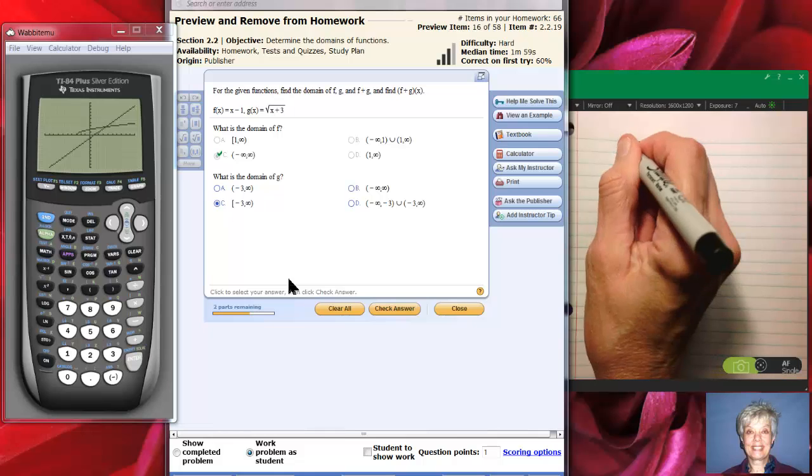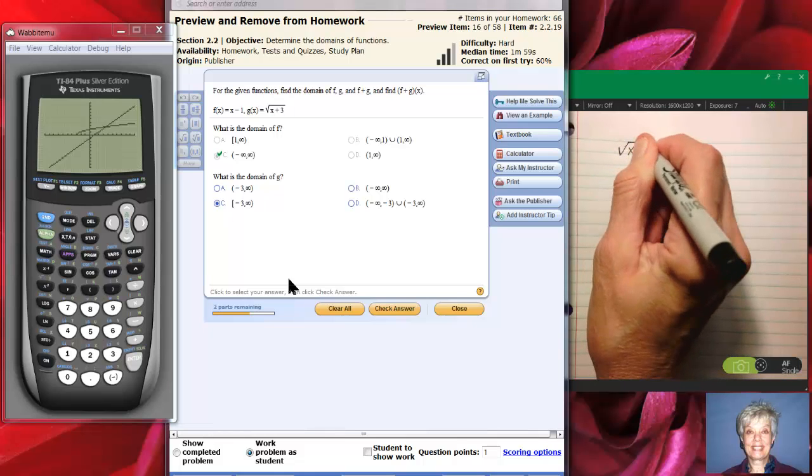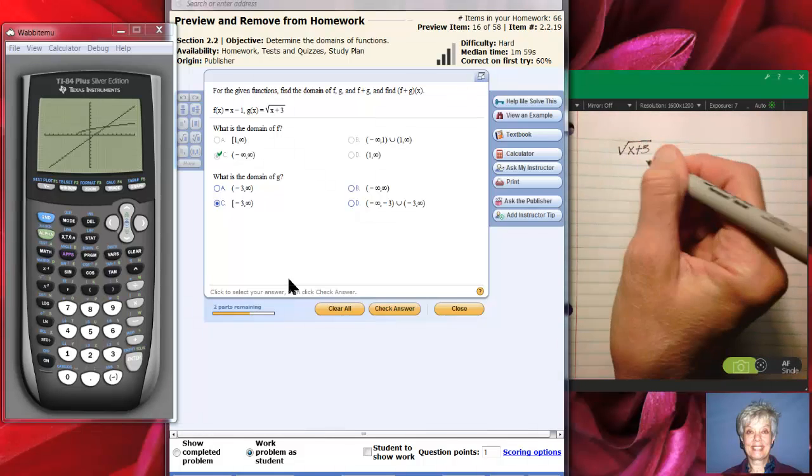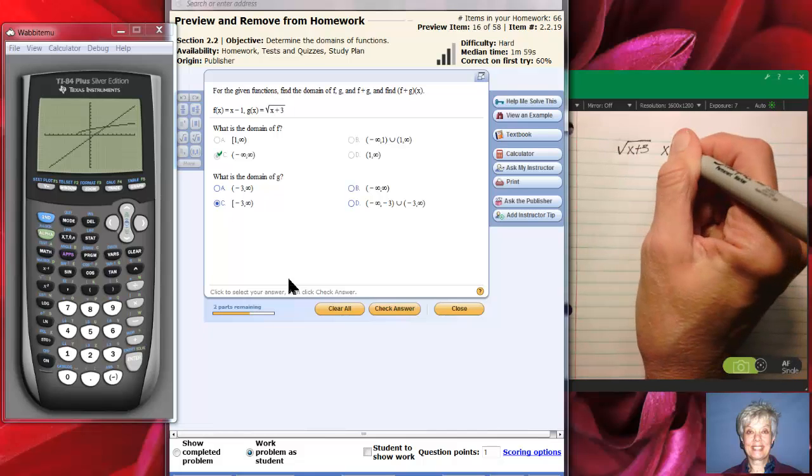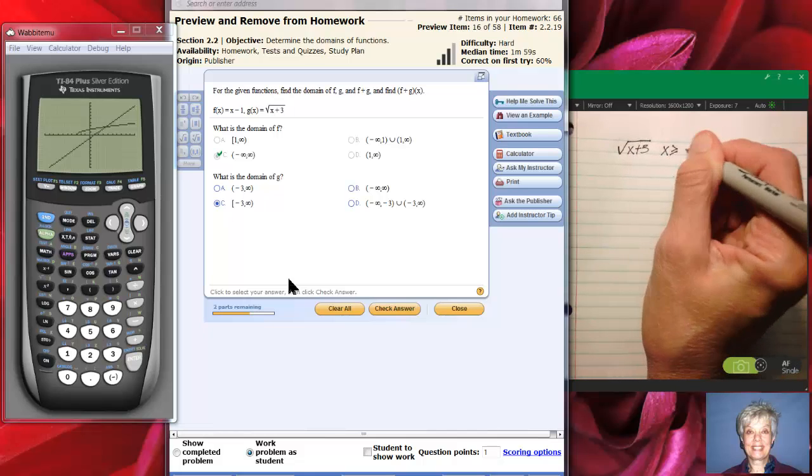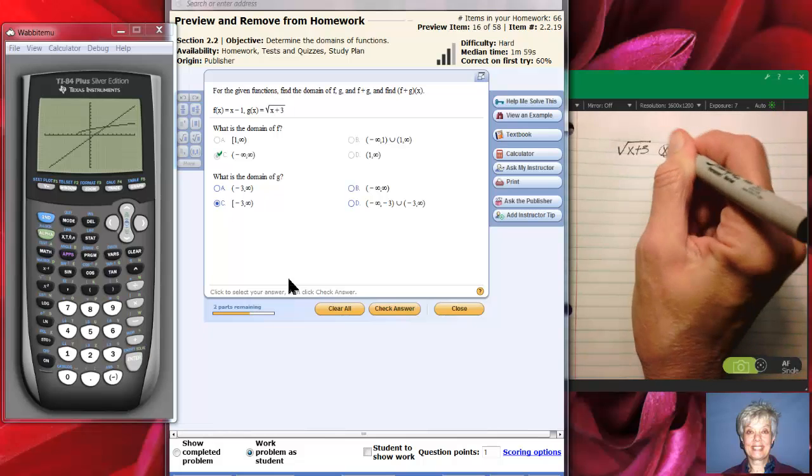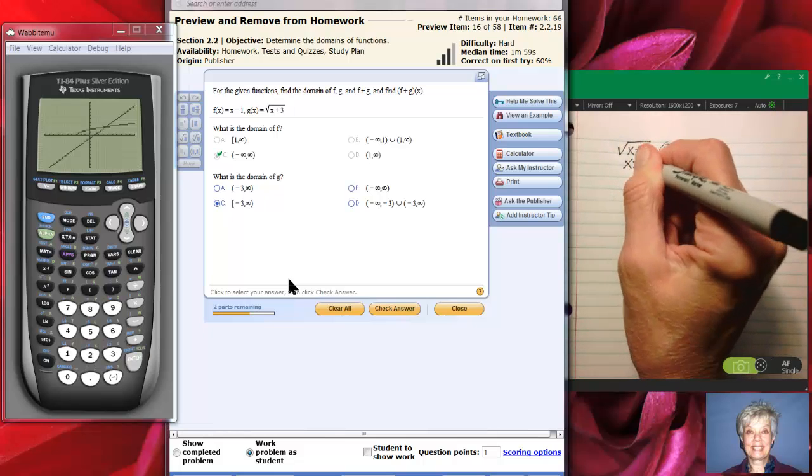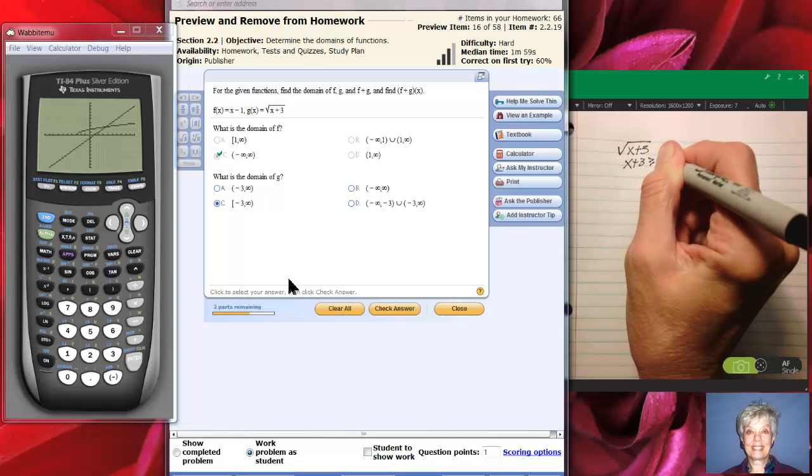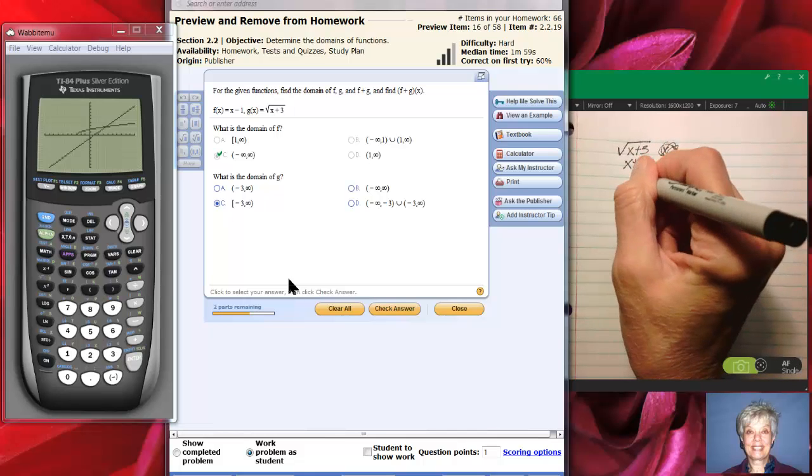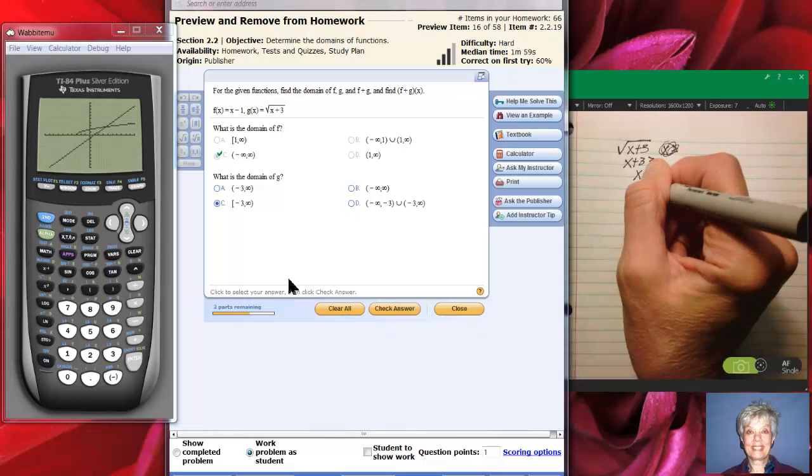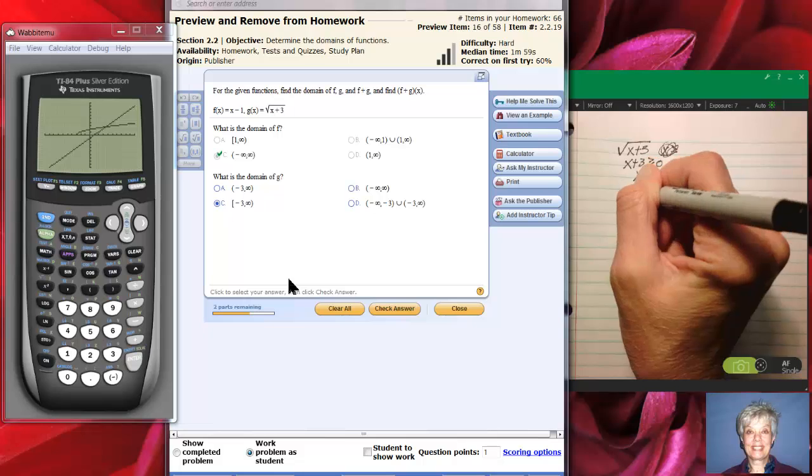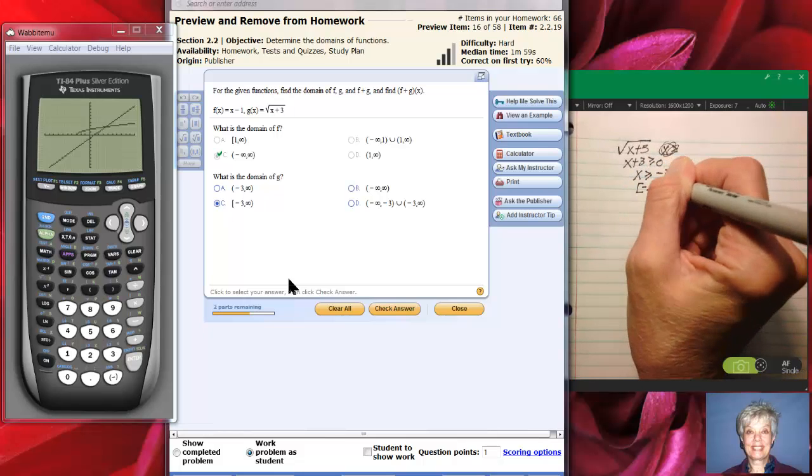Well here we have x plus 3 and it's got to be positive because it sure can't be negative. Well it could be zero. But in fact whatever is underneath the square root radical if it's in our number system has to be greater than or equal to zero. So x is going to be greater than or equal to negative 3 which means our domain will be negative 3 to infinity.